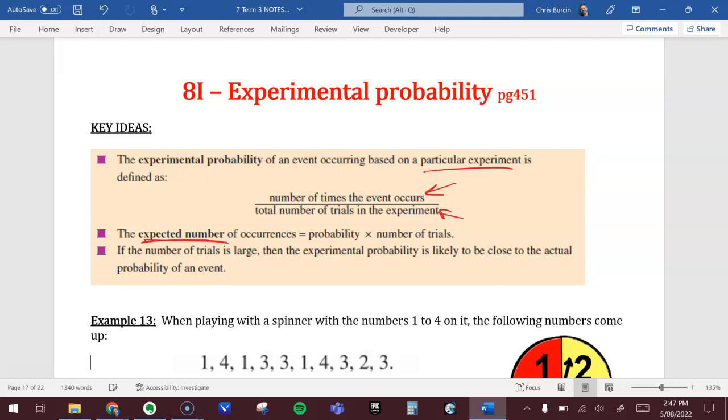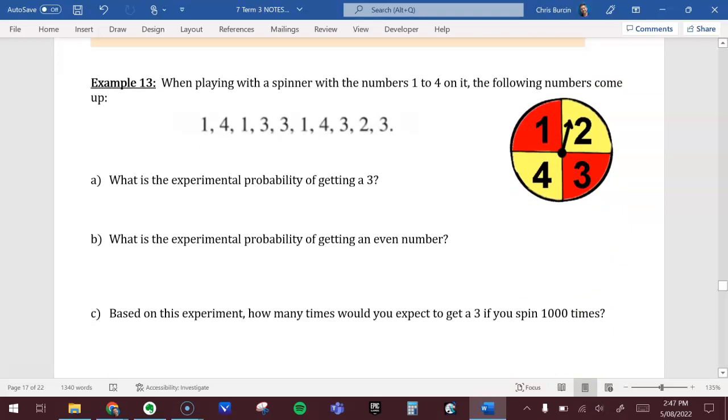The expected number of occurrences is the probability times the number of trials. If the number of trials is large, then the experimental probability is likely to be close to the actual theoretical probability. The more we do it, the more the theoretical probability should be right.